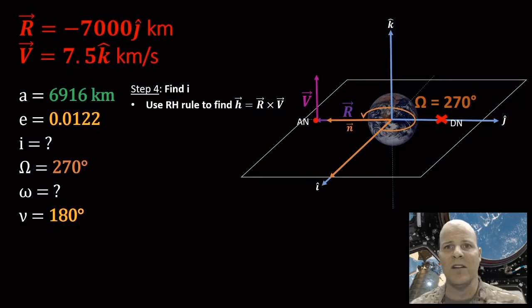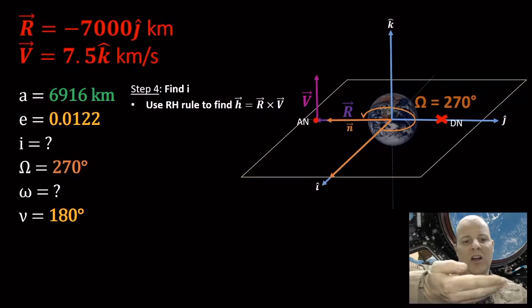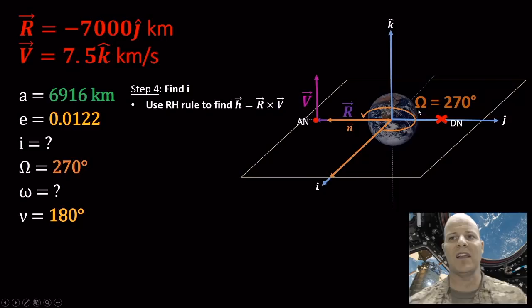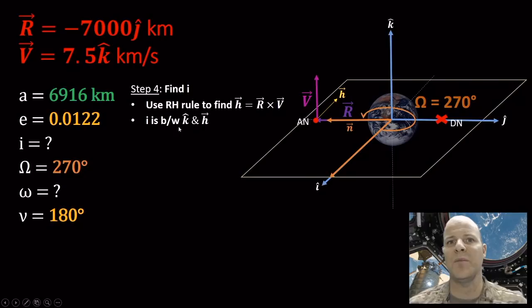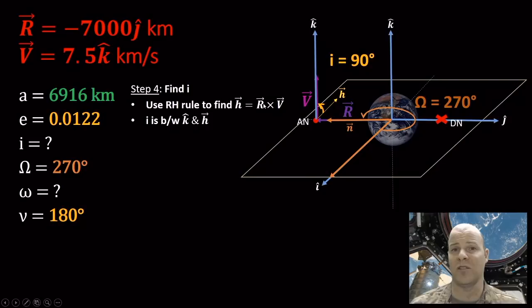Now for inclination. I'll use the right-hand rule to find specific angular momentum H = R × V. Fingers along R, curve toward V — my thumb points in the direction of H. The inclination I is the angle between K and H. Shifting the K vector to where my spacecraft is and comparing, it's clear that the inclination of this orbit is 90 degrees. So we're in a polar orbit.